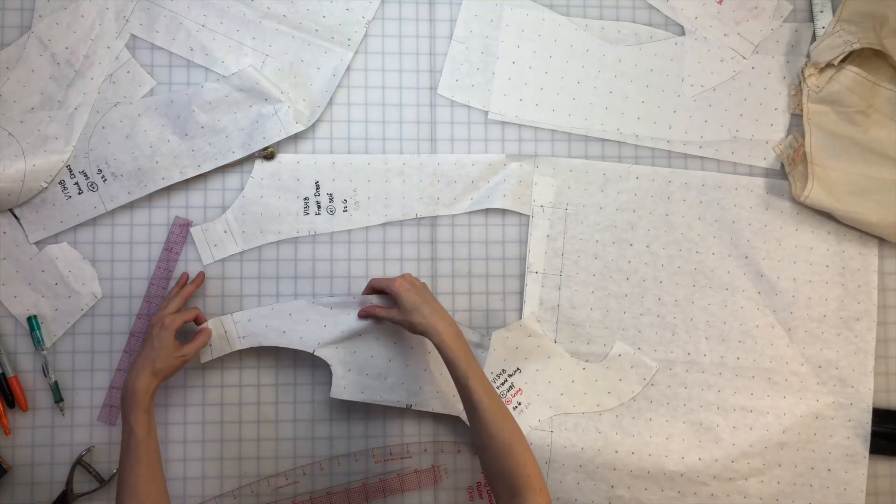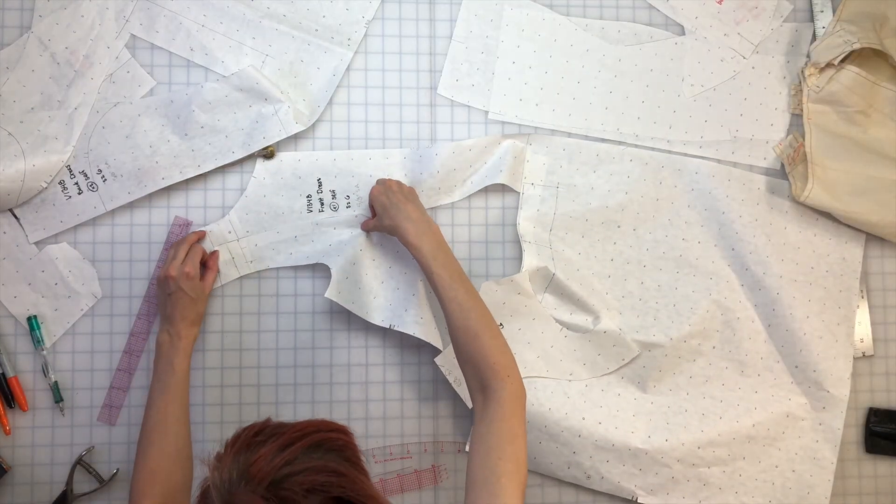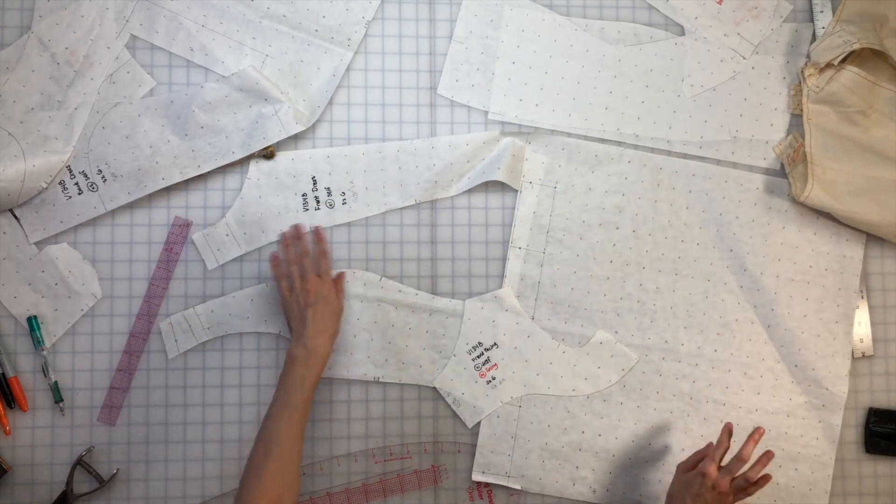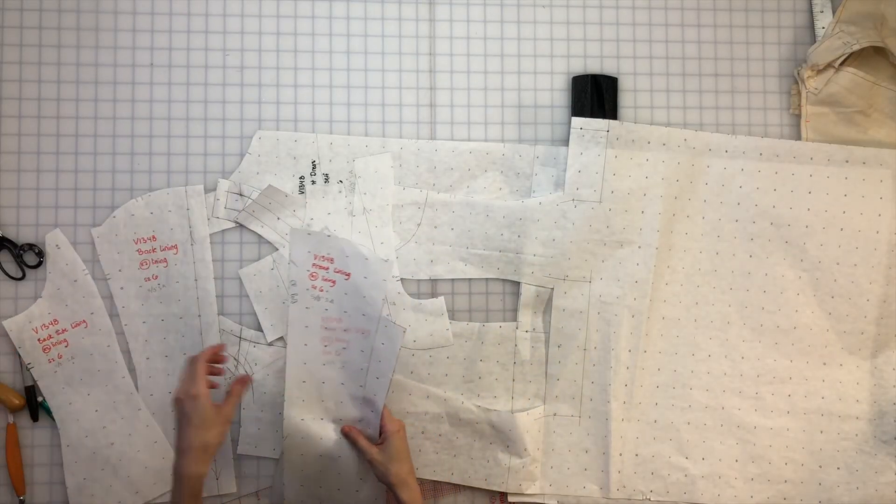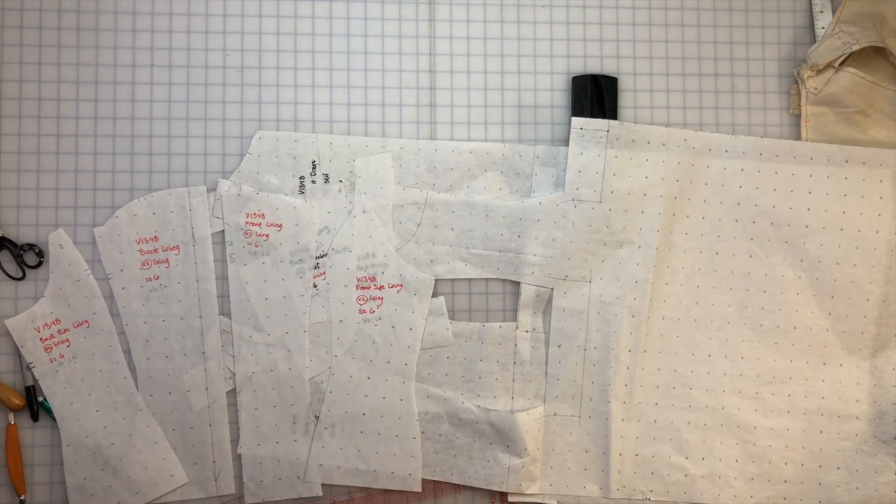Don't forget to alter your lining pieces too, and keep in mind if you change any seams, the adjoining piece may need to be adjusted as well. Well, I sure hope I got everything. There were a lot of pattern pieces to keep track of. In the next video, I'll show you how to cut and start sewing the dress.